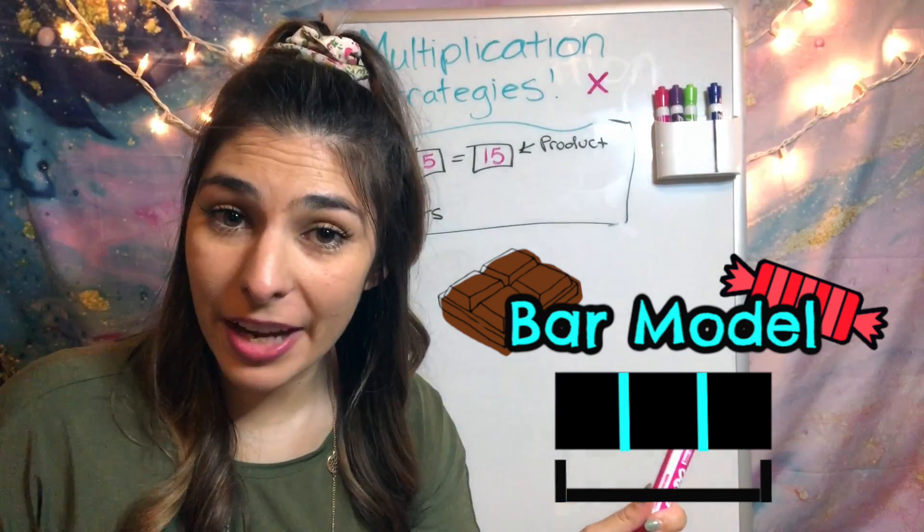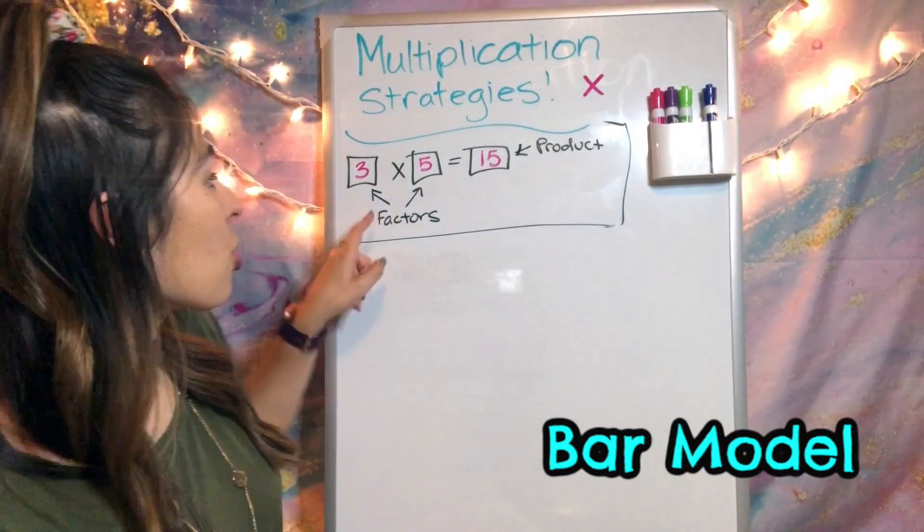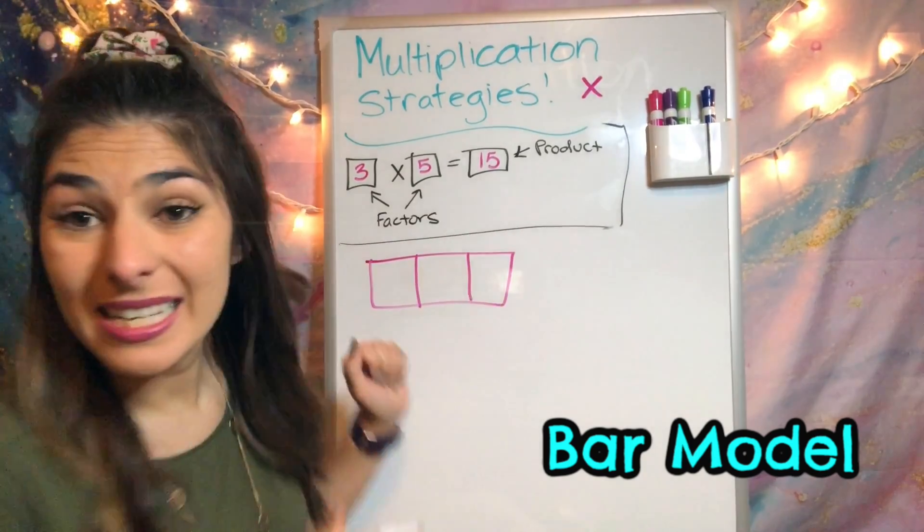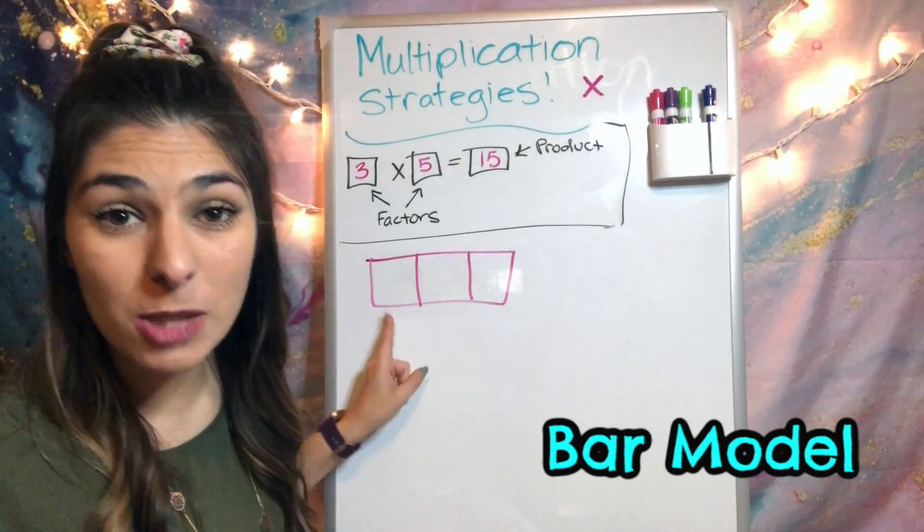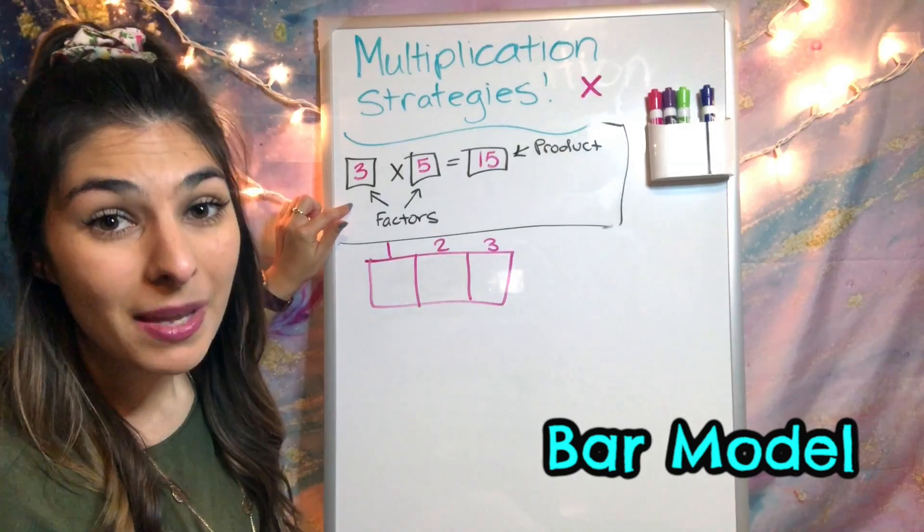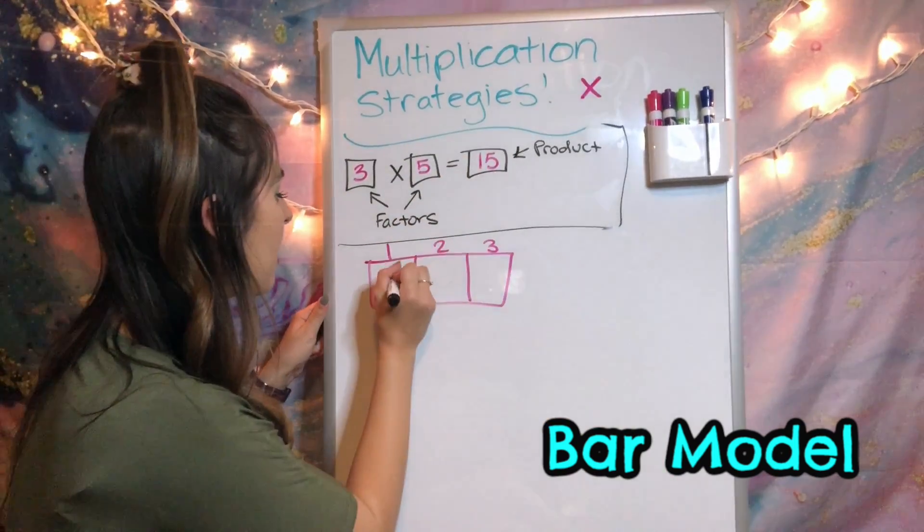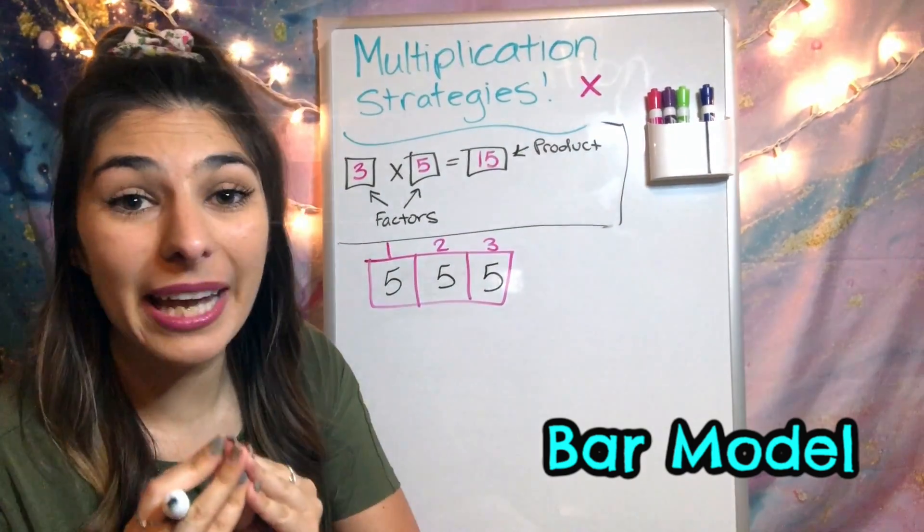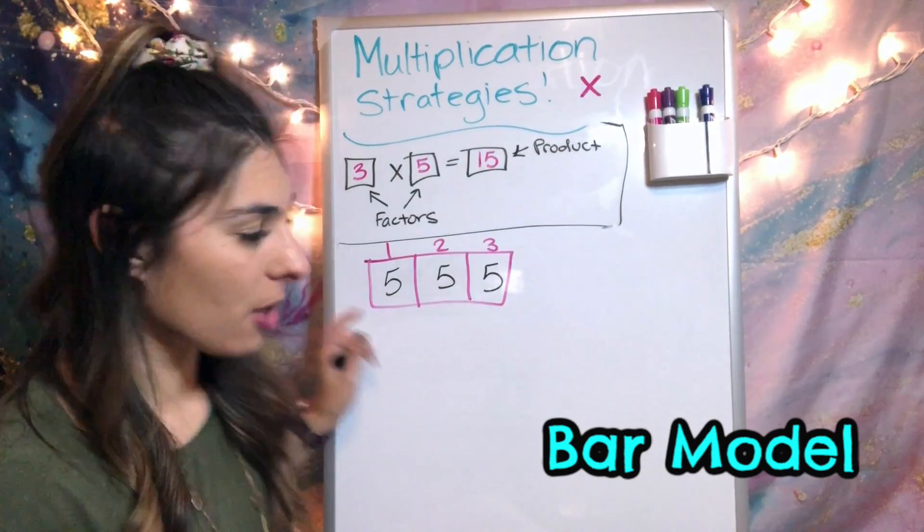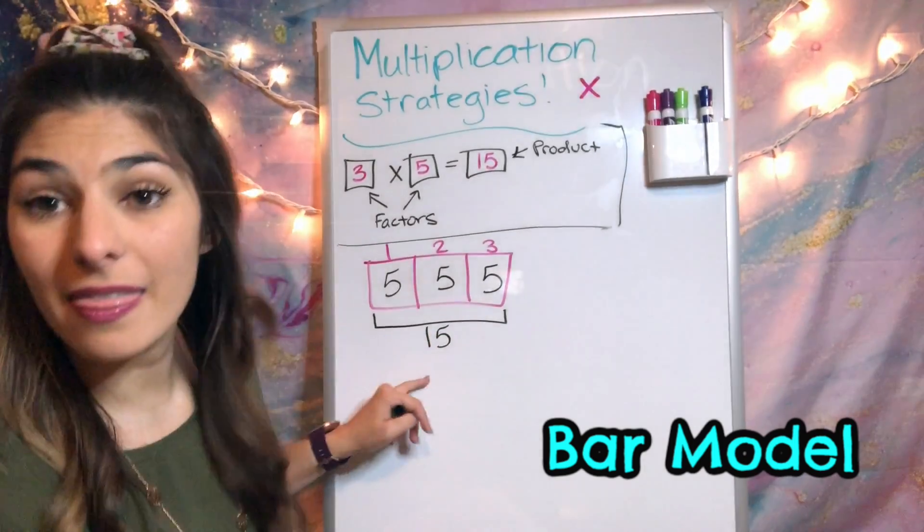For our next strategy, we have a strip diagram or a bar model. The name kind of varies. So we're going to again start with our factors. I'm going to make a giant box rectangle and split it up into 3 sections. I like the term bar model because I like to think of this as a giant candy bar. So we're splitting up into 3 different spots. Now in each box, we're going to have our other factor which is 5. So I'm going to put 5 in each one. And once we add those all up, we'll get our factor which is 15.